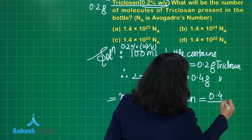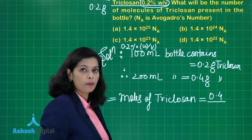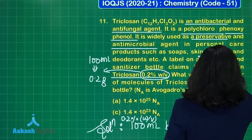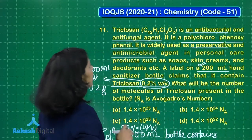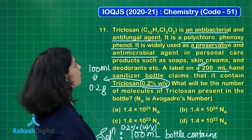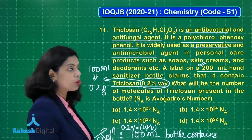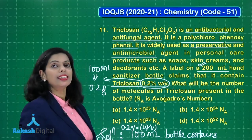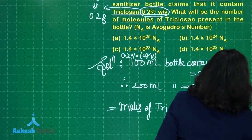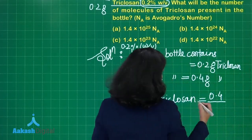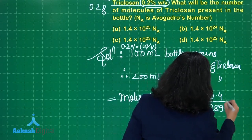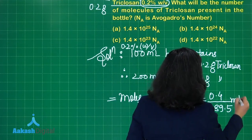Moles of triclosan equals given mass 0.4 divided by its molar mass. The molar mass is found from the molecular formula C₁₂H₇Cl₃O₂ using atomic masses: carbon = 12 u, hydrogen = 1 u, chlorine = 35.5 u, and oxygen = 16 u. Calculating the molar mass from this molecular formula gives 289.5 g/mol.